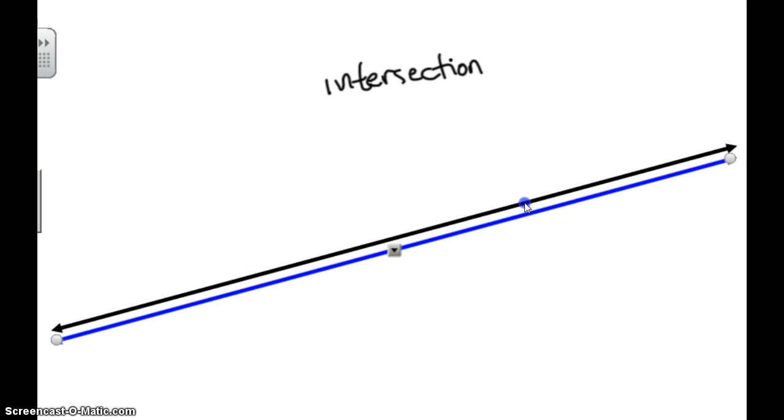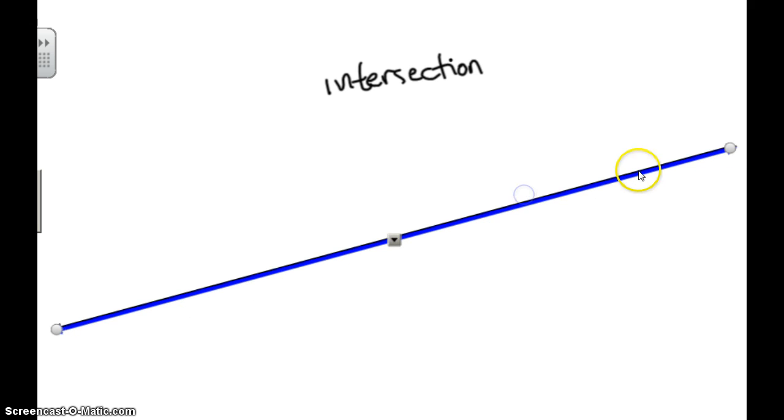If two lines were directly on top of each other, like in the scenario here, then they would intersect at every point along the line. So in this case, when a line is on top of a line, their intersection would be the line itself.